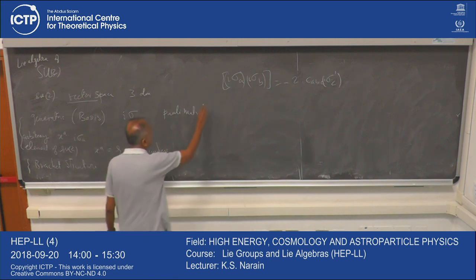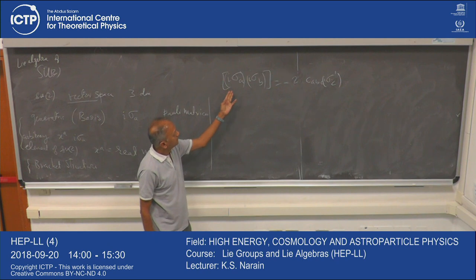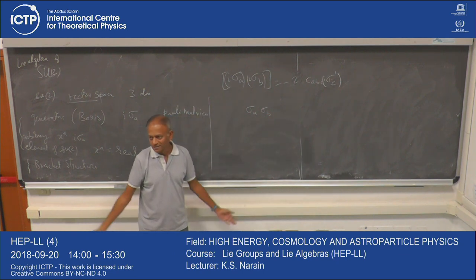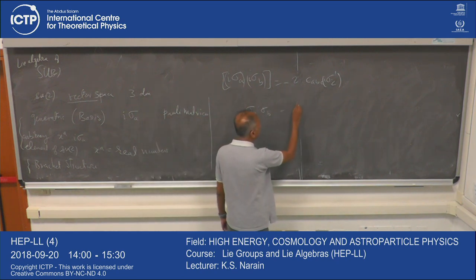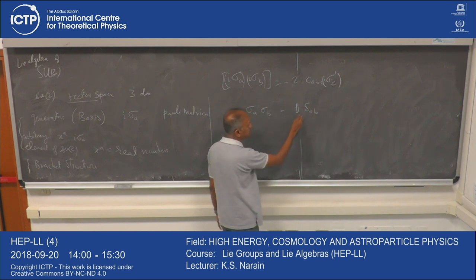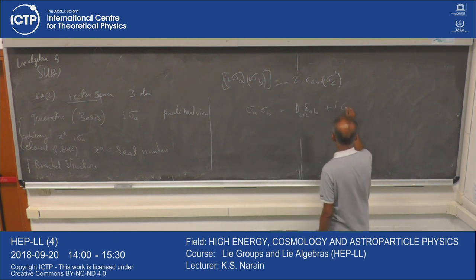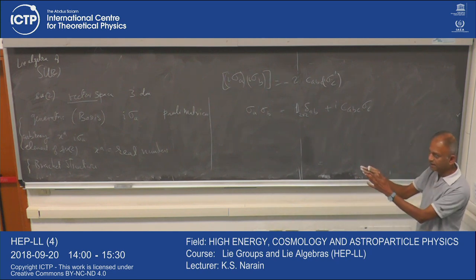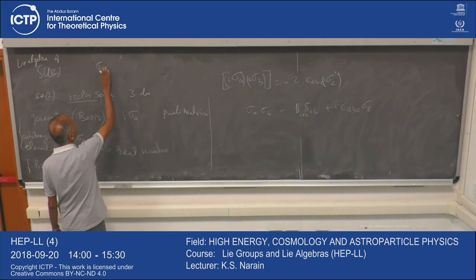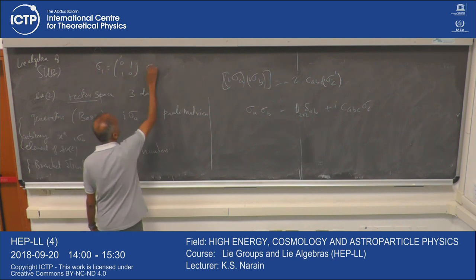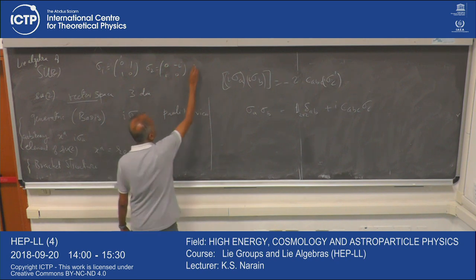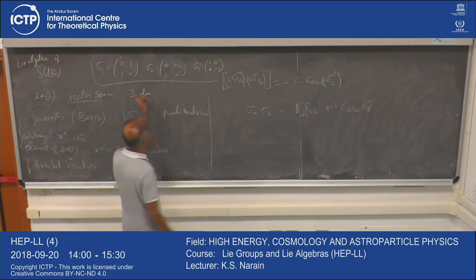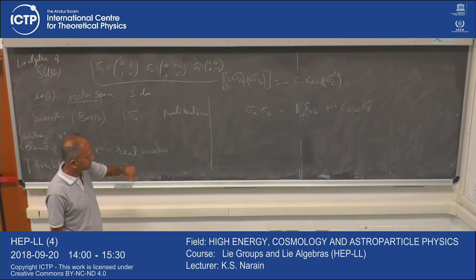We can do a bit more with the Pauli matrices. After all, these are 2×2 matrices, so I can just multiply two of them and see what you get. You get: σ_A σ_B = δ_{AB} · I + i ε_{ABC} σ_C, where I is the 2×2 identity matrix. You can check this explicitly using the three Pauli matrices: σ₁ = [[0,1],[1,0]], σ₂ = [[0,−i],[i,0]], σ₃ = [[1,0],[0,−1]].